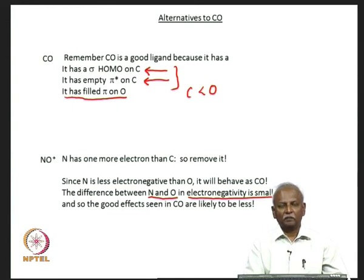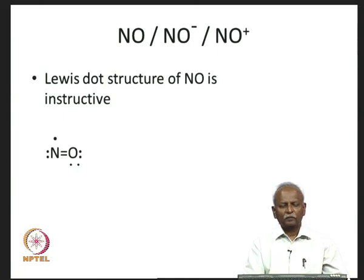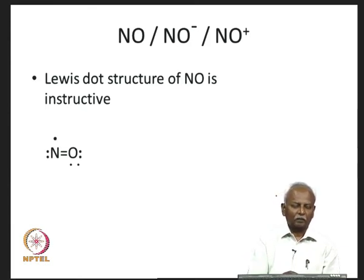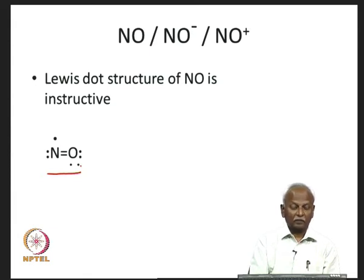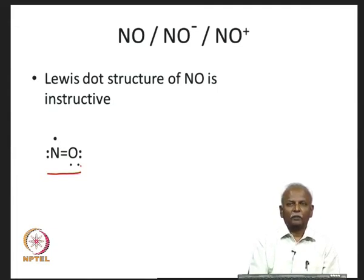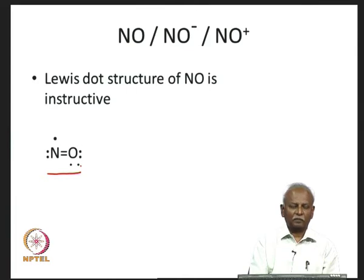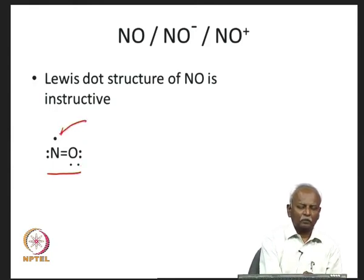Most of this lecture will deal with the NO plus ion. First, it is instructive to look at the Lewis dot structure of NO. We find that there are two lone pairs on oxygen and a pair of electrons on the nitrogen, and a single electron on the nitrogen as well. This is the best Lewis structure — the closest we can get to the octet on both atoms. Nitrogen has got seven electrons and oxygen has an octet. This is the best resonance form we can get, and we notice that the single electron on NO is localized on nitrogen.